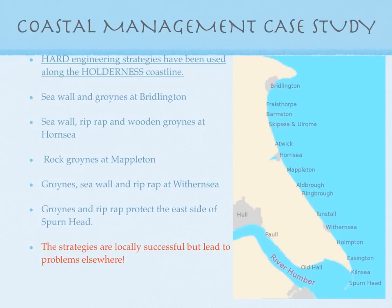Looking at our case study — coastal management on the Holderness coastline, found on page 26 of your revision guide. Hard engineering strategies have been used there. Looking down the map from top to bottom: a seawall and groin have been built at Bridlington near Flamborough Head. A seawall, riprap, and wooden groins at Hornsea. Rock groins at Mappleton. Groins, seawalls, and riprap at Withensea. Groins and riprap protect the east side of Spurnhead. The strategies are locally successful but lead to problems elsewhere, so there is conflict further down the coast.